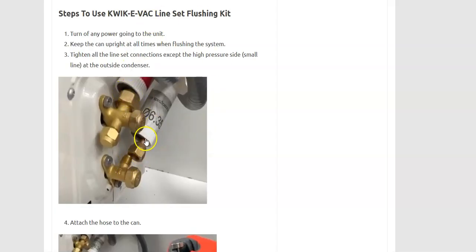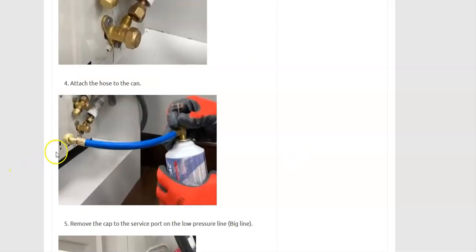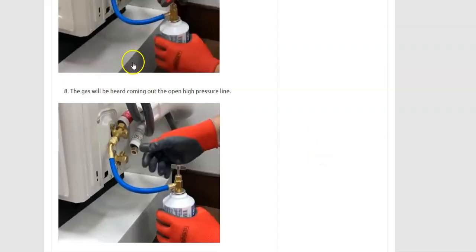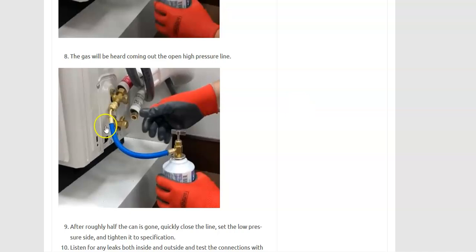Then you connect this can to the system on the Schrader valve. You open up the can to let in the propellant, and it runs through the system and starts coming out the high pressure side. This is supposed to blow it all out.